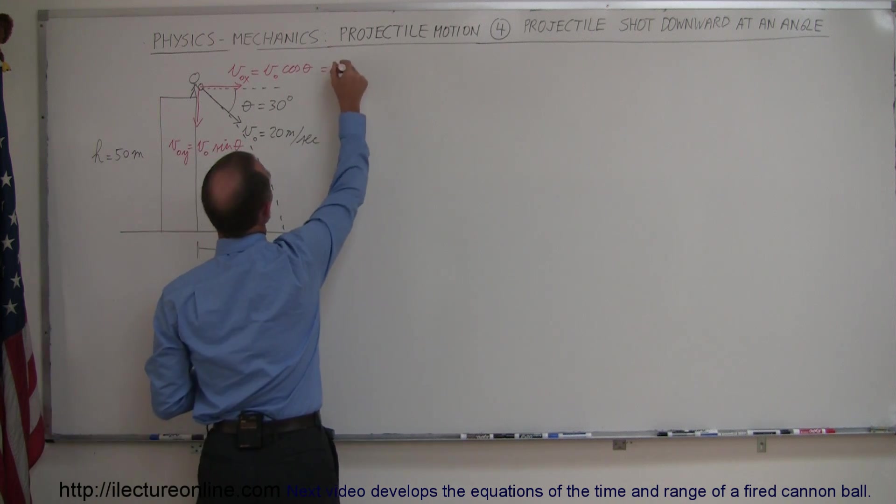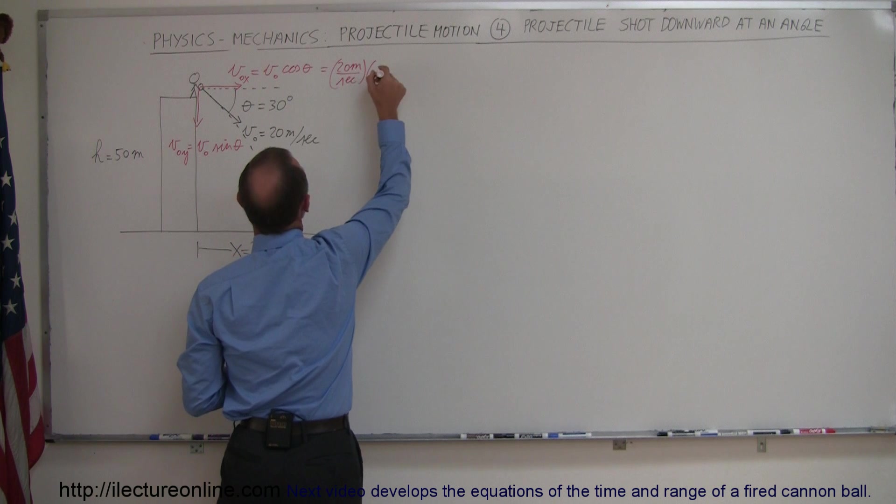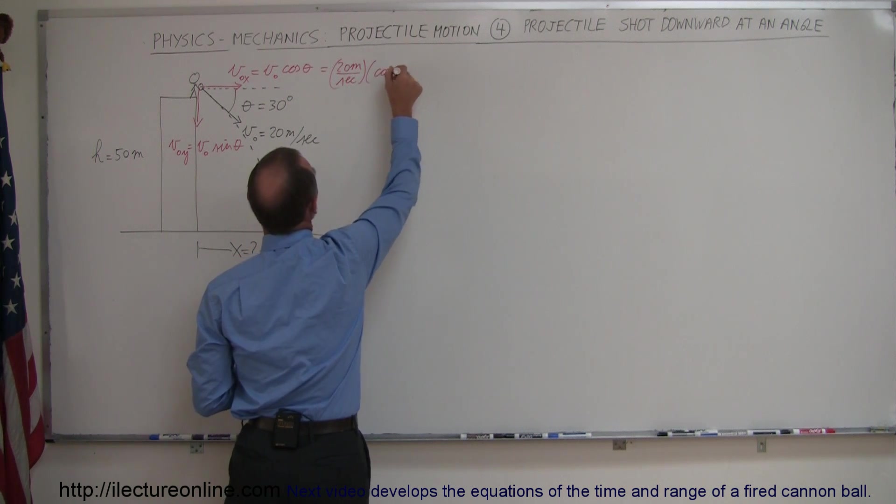So let's plug those numbers in. This is equal to 20 meters per second times the cosine of 30 degrees.